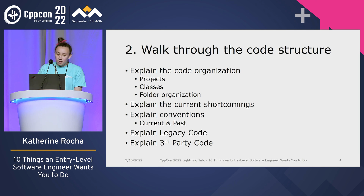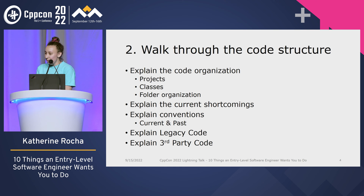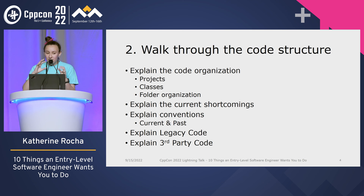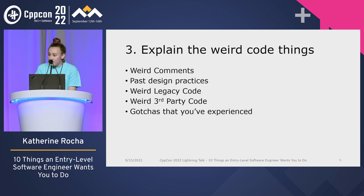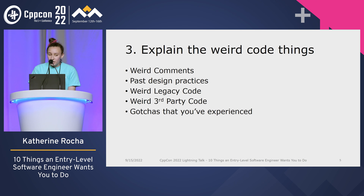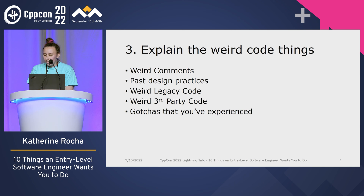The third thing: walk through the code structure. Code is weird — everyone does it differently. Explain the legacy code, explain the third-party code, explain the past conventions versus the current conventions and how it can look different as you're going through, as well as the current shortcomings. Explain the weird code things, because everybody has them and they exist everywhere. Explain those gotchas so that when they see something weird, it's not a surprise — you kind of warn them about it.